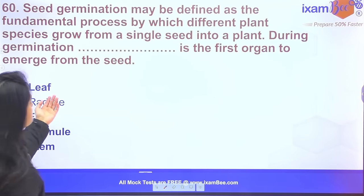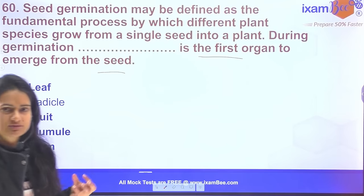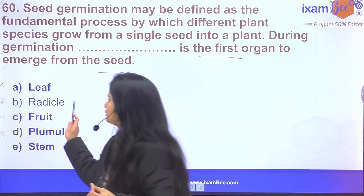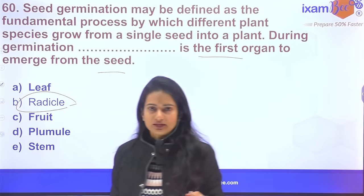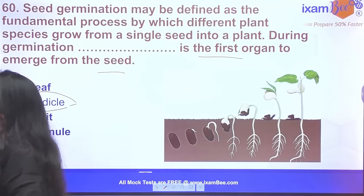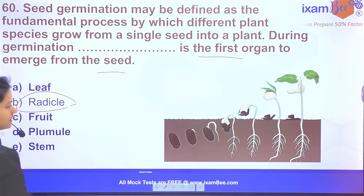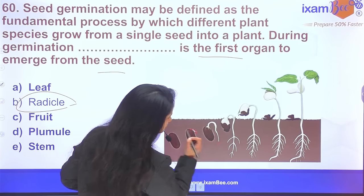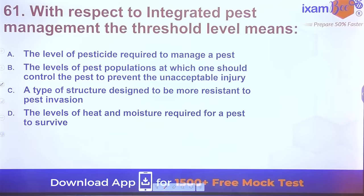Question 60: During germination, which is the first organ to emerge from the seed? The first organ to come out is the root — the radicle emerges first, and then the plumule. Root establishment happens first, then the above-ground part.